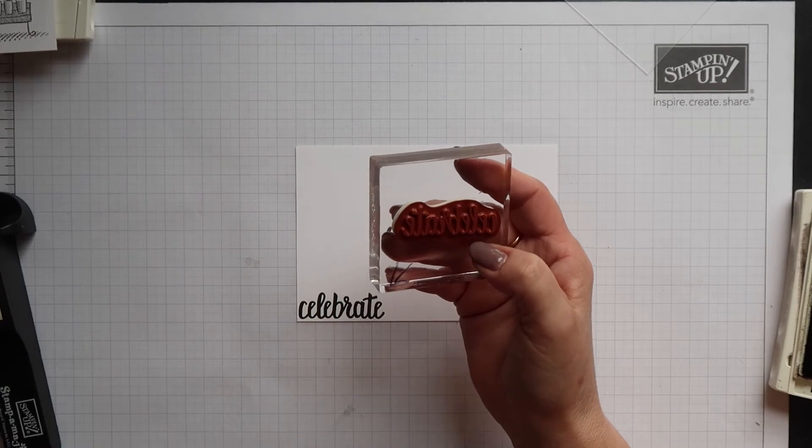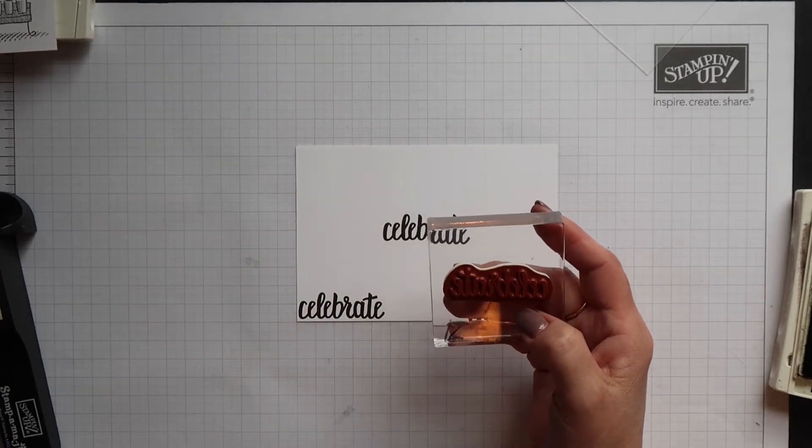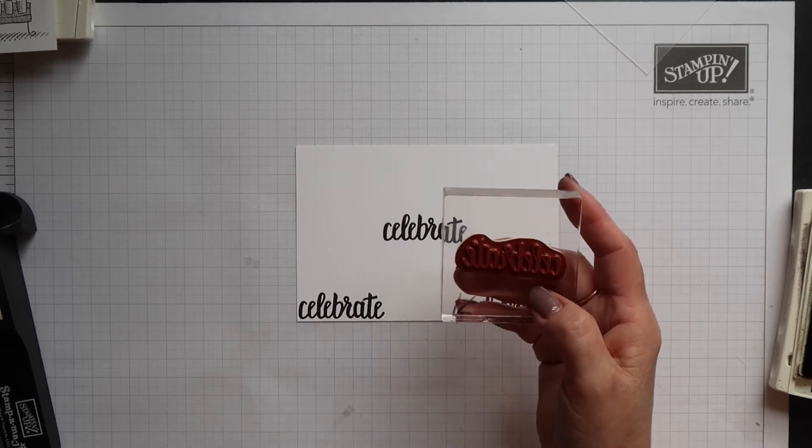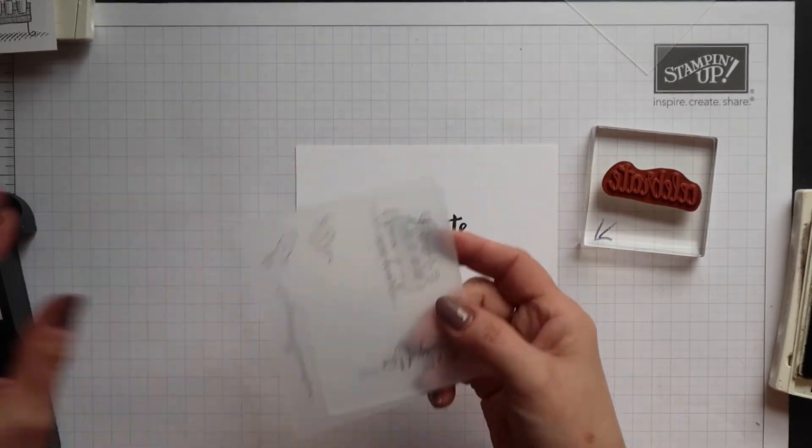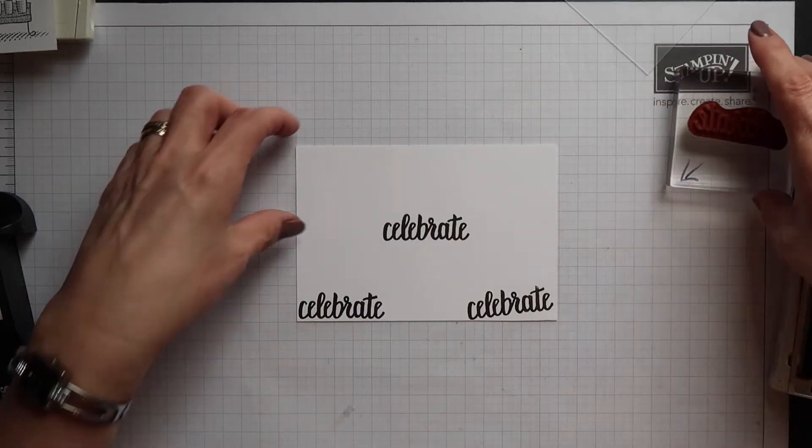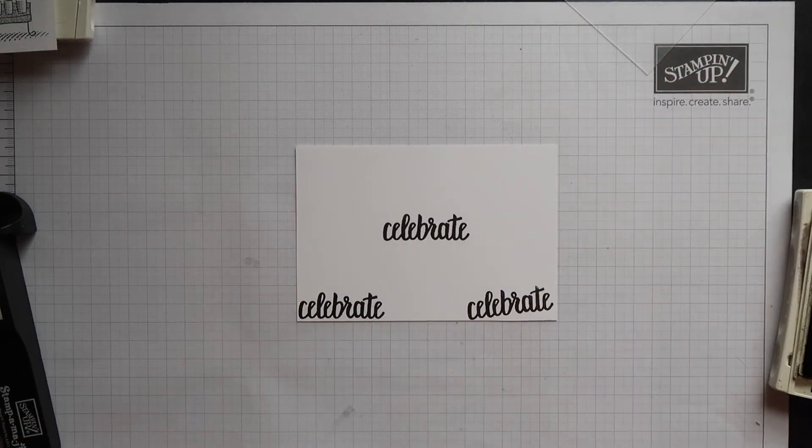So the only difference between wood mount and clear mount stamps are that you cannot produce permanent imaging sheets for your clear mount stamps because whenever you add your stamps to the block you will never get it in exactly the same position, okay so it's pointless trying to create a permanent imaging sheet for your stamp sets that are clear mount.